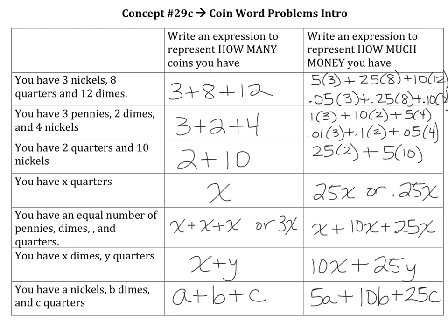Look at what I came up with. Notice on the right-hand side, I just started dropping my decimal points — I prefer to write coin problems without decimal points. For any of these, you just have to use one form or the other. The biggest takeaway: if you're writing an expression to represent how many coins you have, you're just adding the number of coins. But if you're asking how much money you have, you have to assign the value of the coin in your expression — the coin's worth has to get multiplied by how many coins you actually have.